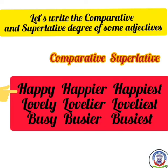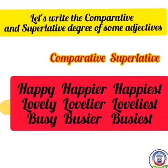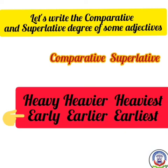H-A-P-P-Y is 'happy'. In the comparative, Y is removed and -IER is added: H-A-P-P-I-E-R, happier. In the superlative, -IEST is added: H-A-P-P-I-E-S-T, happiest. Similarly: lovely → lovelier → loveliest; busy → busier → busiest; heavy → heavier → heaviest; early → earlier → earliest.